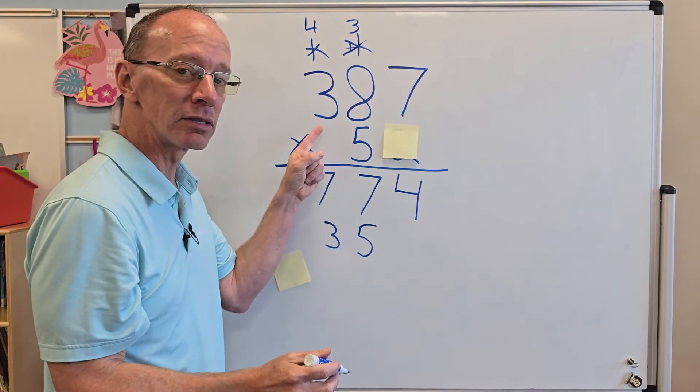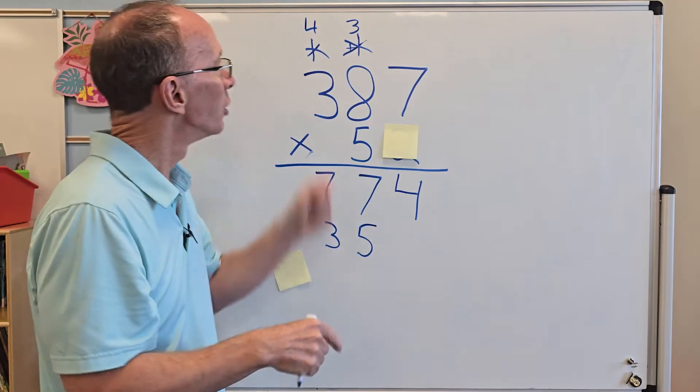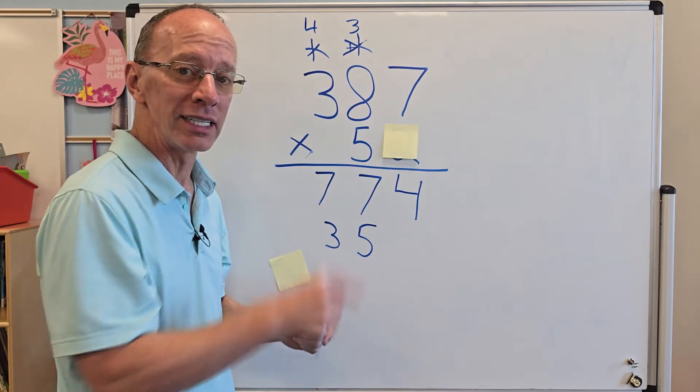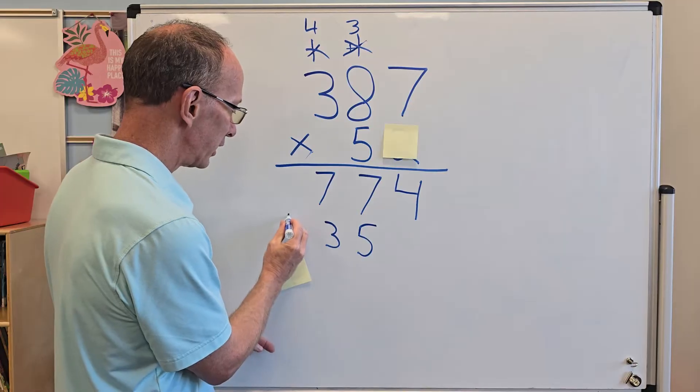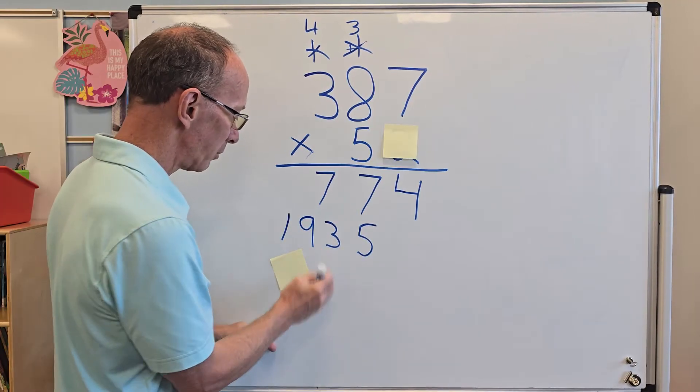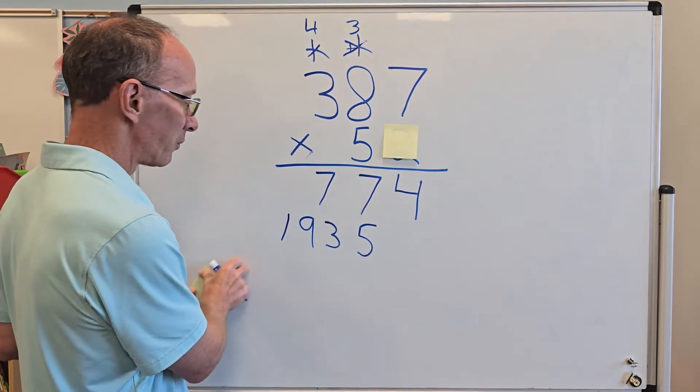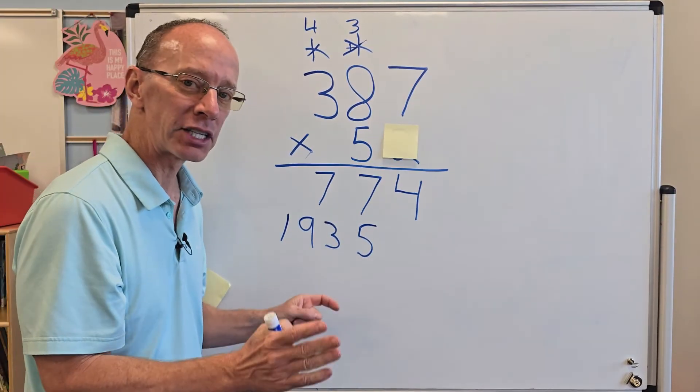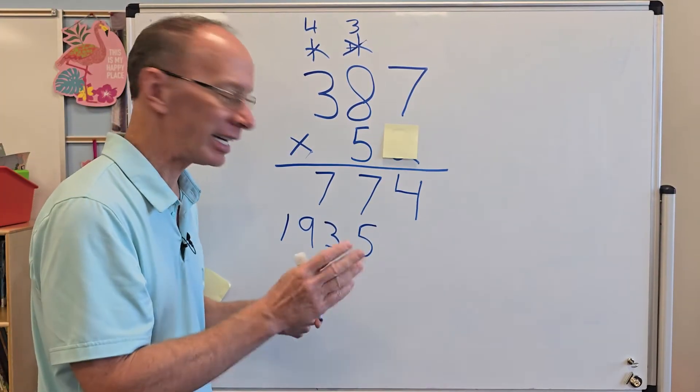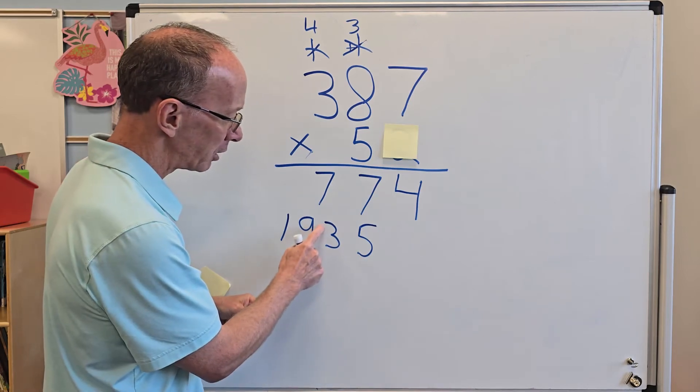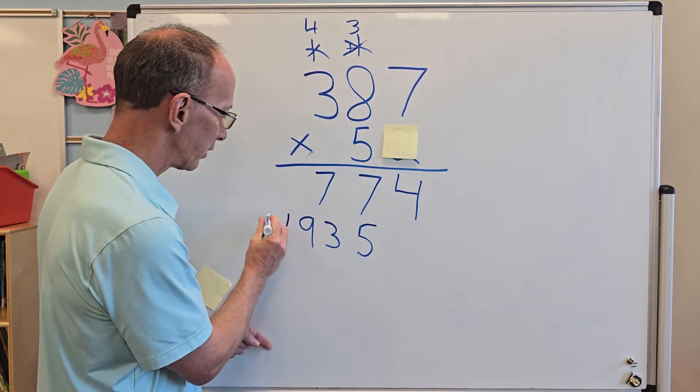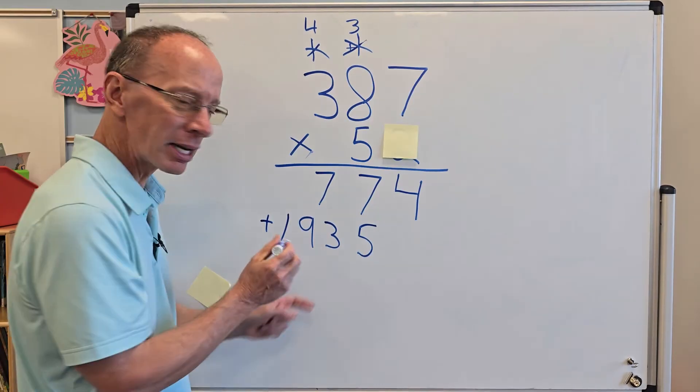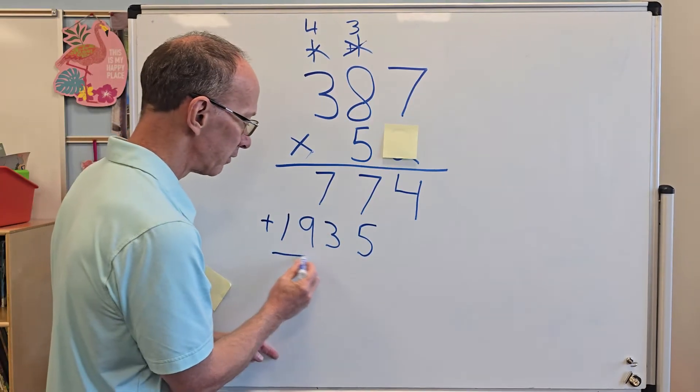Five times three equals 15 plus the four, 19. So I put the 19 right here. I'm going to move this post-it note here. So now I have these numbers here. When you write these numbers, make sure you're writing them very neatly and in the row. I probably should have moved my three over a little bit. So you don't want to get those numbers mixed up. Now I'm going to add these two sets of numbers.